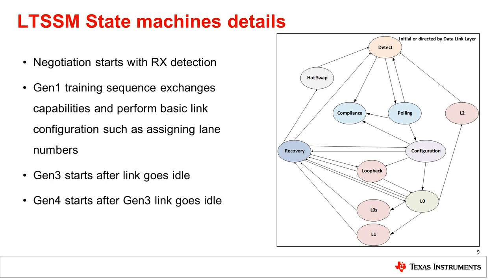Afterwards, a higher data rate may be advertised by a link partner. If both ends confirm higher data rate support, the same process occurs, and the link will go again into the recovery state. From the recovery state, configuration is started again until the final data rate is achieved. Then, instead of recovery, the link will move into L0. For the retimer, this is called forwarding mode.